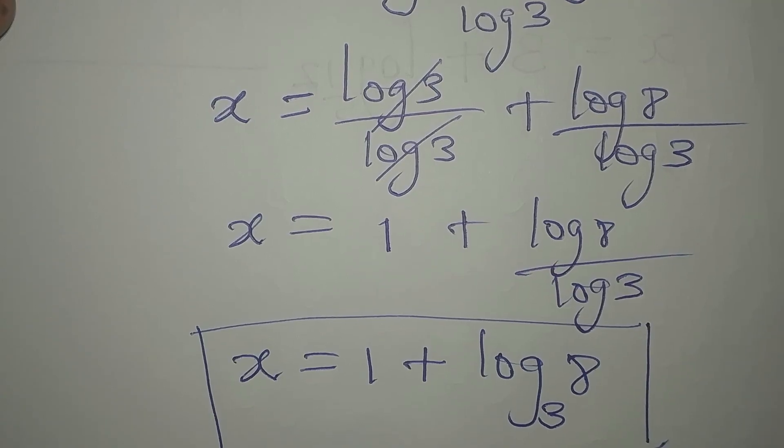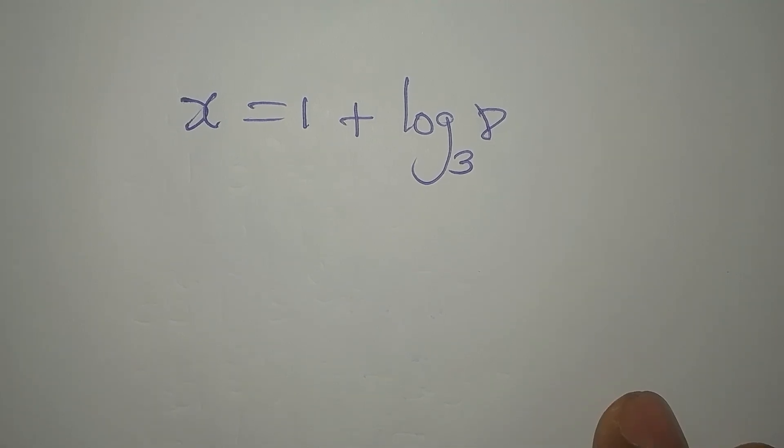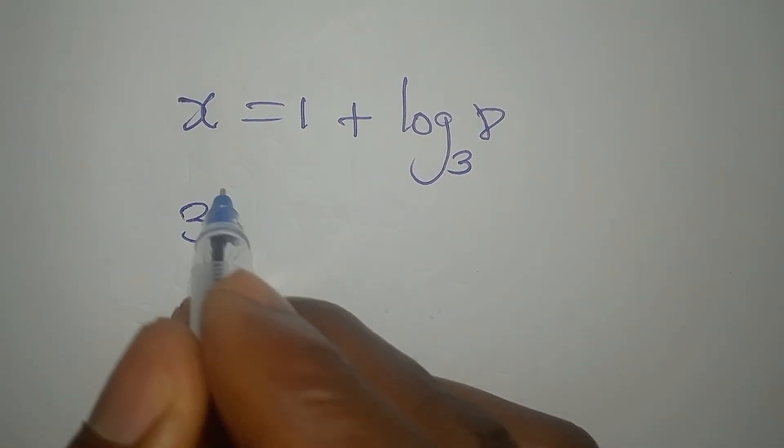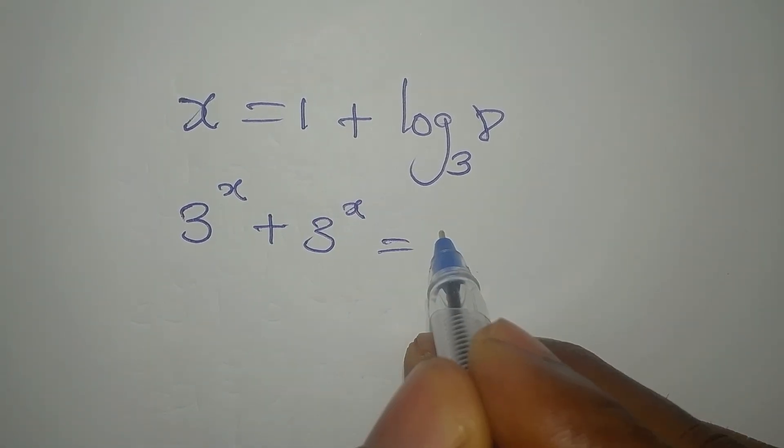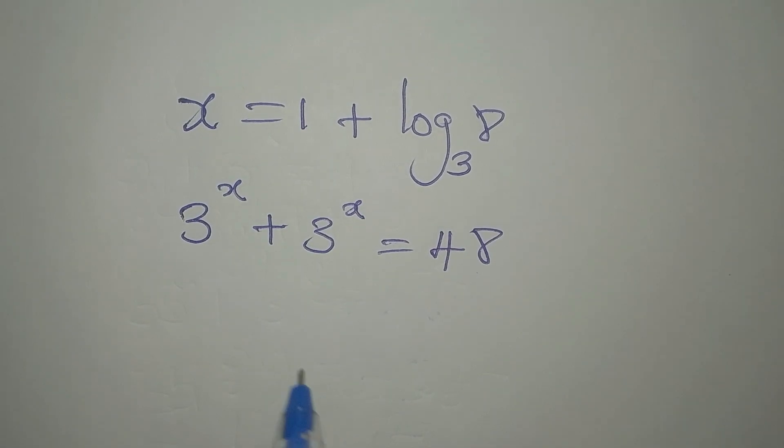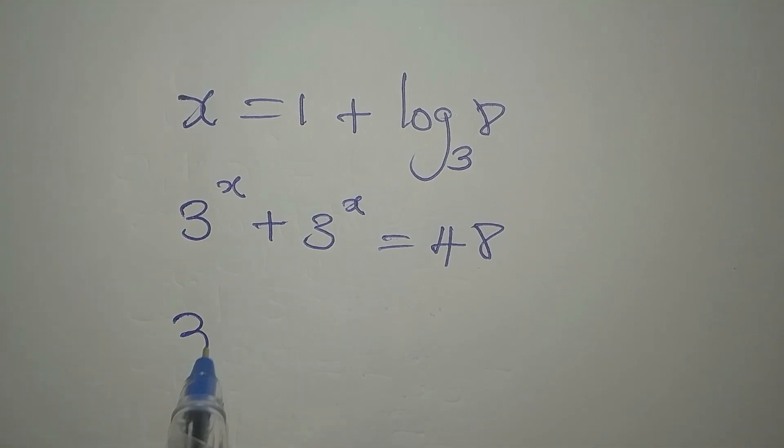The given equation is 3 to the power of x plus 3 again to the power of x equals 48. Now in place of x, I'm going to write 1 plus log 8 to base 3.